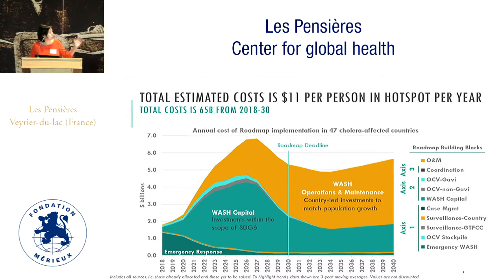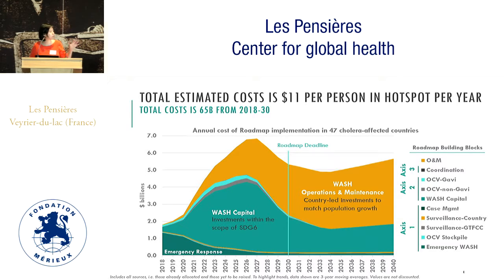You can see a real ramp-up of WASH capital costs prior to 2030. After 2030, the composition of costs shifts from WASH capital costs to operations and maintenance.